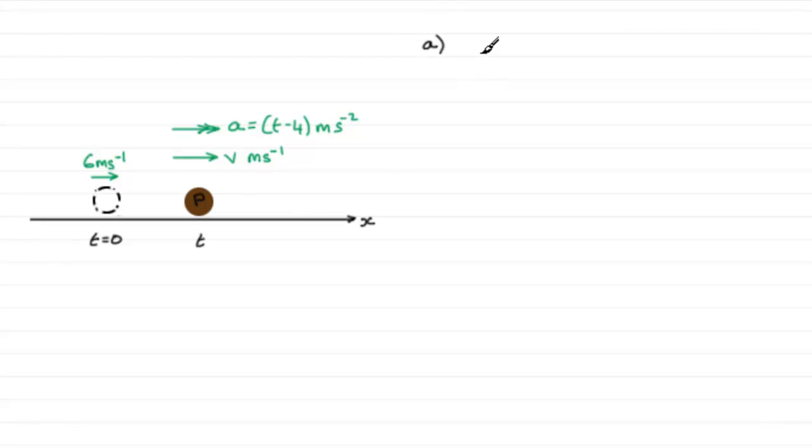For part a, how are we going to go about this? We're given the acceleration and it varies because it's a function of t. We should know that normally we get acceleration by differentiating v with respect to time. Acceleration is the rate of change of velocity with respect to time.